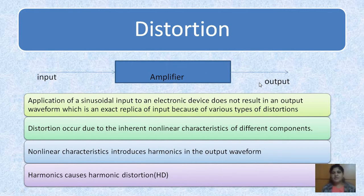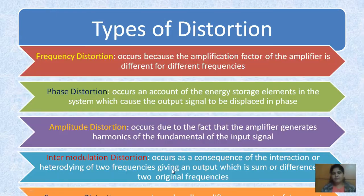These distortions occur due to the non-linear characteristics of different components. Those non-linear characteristics introduce harmonics in the output waveform, and we call it as harmonic distortion.